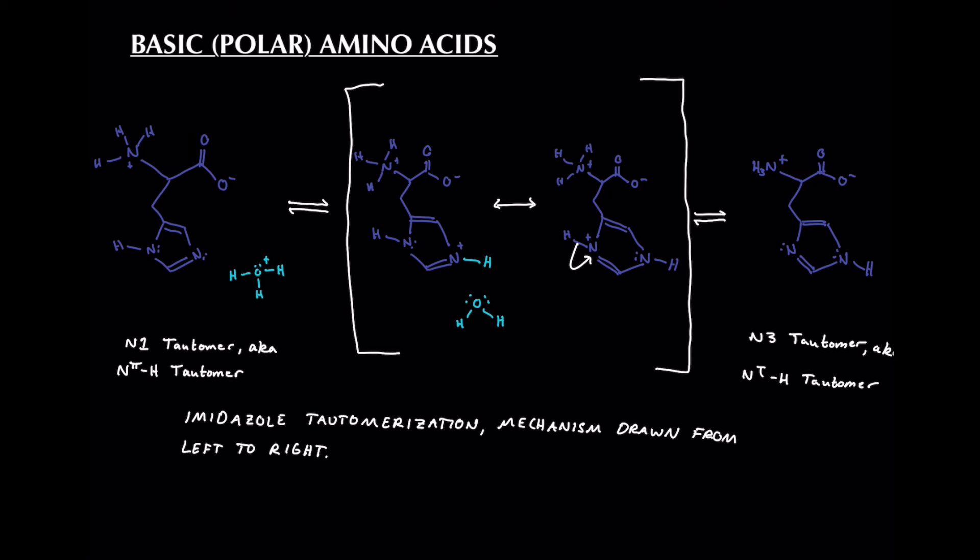So, what we have going on here is our nitrogen on our left will pick up a hydrogen from a hydronium ion. And then this hydronium ion will take on an extra electron pair becoming water. So we move on to our resonance structures in the middle. Our immediate product can undergo some electron rearrangement to form our structure on the right. Now, water can pick up this hydrogen and allow this nitrogen to take up the lone pair. And finally, we get the tautomer on the right, which is the N3 tautomer, or our N tau H tautomer. And the one on the left can also be called the N pi H tautomer, depending on how you want to label it. So this is tautomerization.